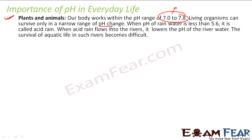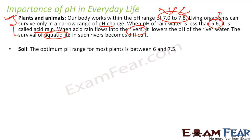Sometimes we get rainwater with a pH of 5.6, and that is called acid rain. This is very harmful because when it flows into rivers, the rivers become acidic and this impacts aquatic life. Aquatic life also needs a comfortable pH of 7 to 7.8.